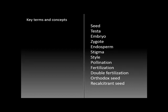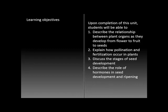Key terms and concepts this week all have to do with the anatomy and physiology of flowers, fruit, and seed. Your learning objectives for this week are to describe the relationship between plant organs as they develop from flower to fruit to seed, to explain the critical processes of pollination and fertilization and how they occur in plants, to describe the stages of seed development, and to know how hormones facilitate seed development and ripening.